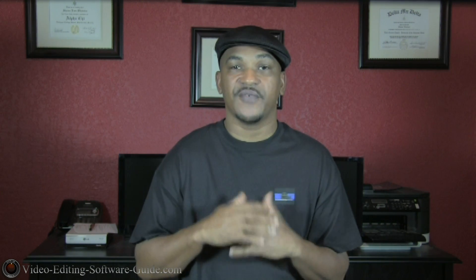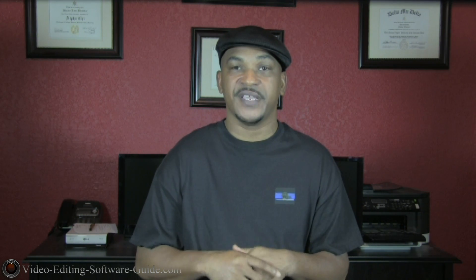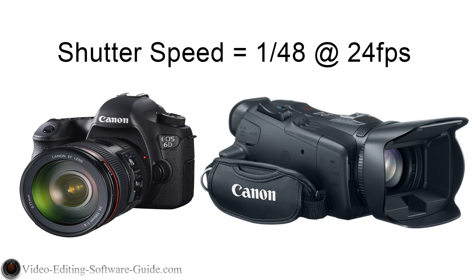Shake up your shutter speed. You want to double the speed of the frame rate in the shutter. When you shoot at 24 frames per second, adjust your shutter speed to 1/48. Doubling the shutter speed decreases the amount of motion blur you experience when shooting at 24 frames per second, keeping that motion blur in its place.